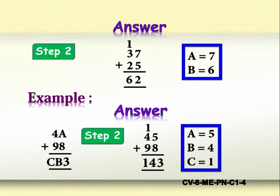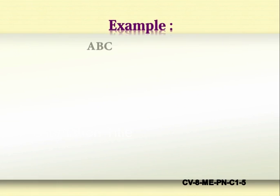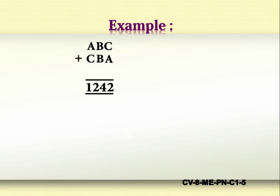Children, let us now consider the addition of three-digit coded numbers. Here is an example: ABC plus CBA gives a sum of 1242. Here, A, B, C are consecutive integers, and in the third row, A, B, C appear in some order. Find A, B, and C.